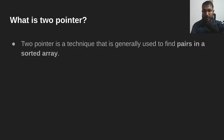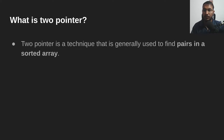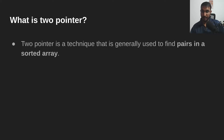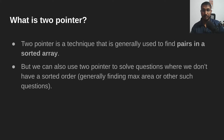Two pointers is a technique that is used to find a pair in a sorted array. That is the main purpose of the two pointer technique. There are also some other use cases — we can use two pointers to solve questions where the array is not necessarily sorted.